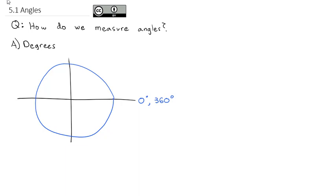One of the reasons 360 was chosen is we can divide 360 by a lot of things and not have a remainder — we can divide by 2, 3, 4, 5, 6, 8, 9, 10. So if I were to divide it in half, halfway around the circle is 180 degrees. Half of that is 90 degrees. And if I go between 180 and 360, that would be 270 degrees.